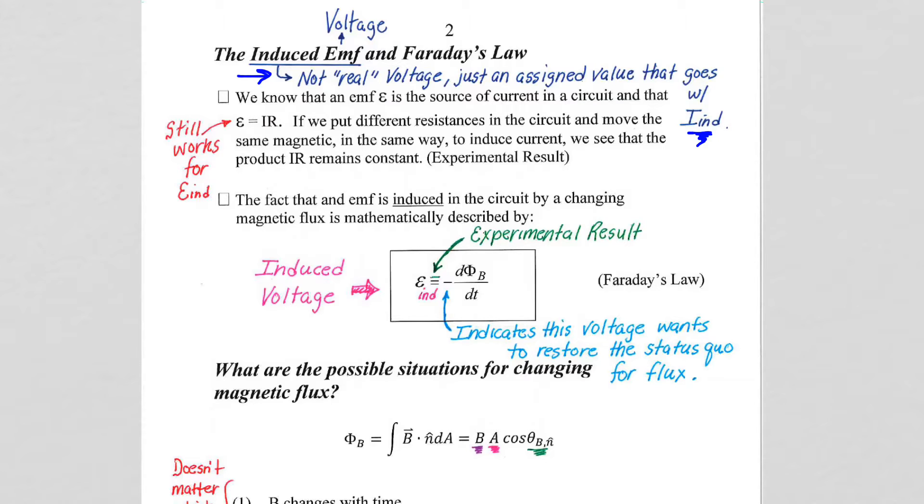Ohm's law still works for induced voltage. If there's a resistor in that coil, the induced current will behave through the resistor according to voltage equals IR. So the voltage across the resistor is still IR based on the induced current and that resistor.